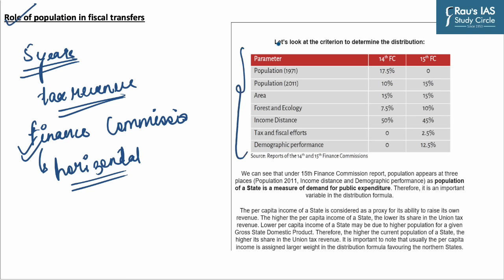From the table, we can see that under the 15th Finance Commission report, population appears at three places: population from the 2011 census, income distance, and demographic performance. Population of a state is a measure of demand for public expenditure and is therefore an important variable in the distribution formula.